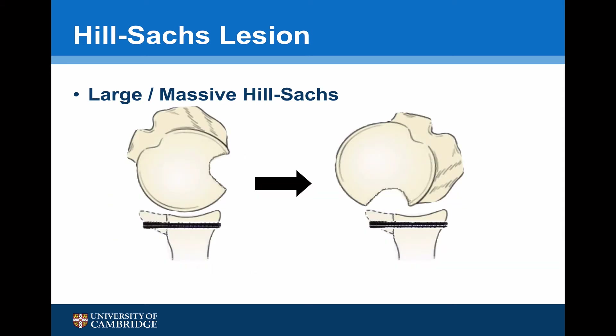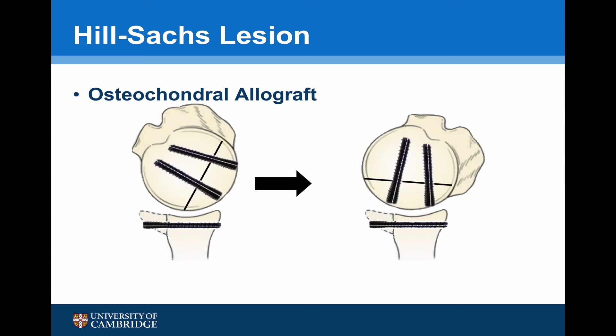The other situation is where there is a massive Hill-Sachs lesion present. These are very rare and tend to only occur in patients with severe epilepsy. In this situation, despite undertaking a glenoid procedure — either a coracoid transfer or a bone block — the Hill-Sachs lesion is so large that it still continues to engage. I prefer to use an osteochondral allograft coupled with either a bone block procedure or a coracoid transfer to address this.